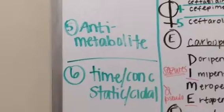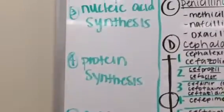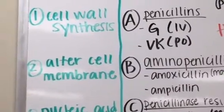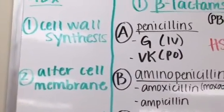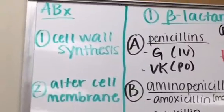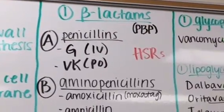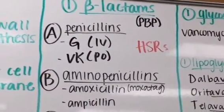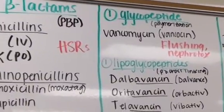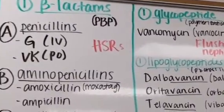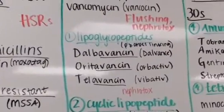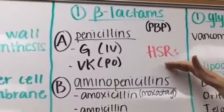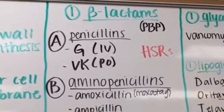The first category is inhibiting cell wall synthesis, and these can be broken down into our beta-lactams, our glycopeptides, and our lipoglycopeptides. Starting off with our beta-lactams, we have three different types of penicillins.